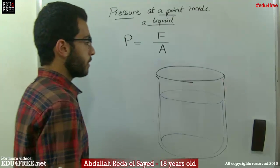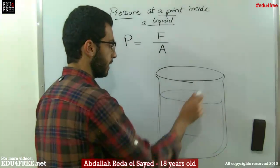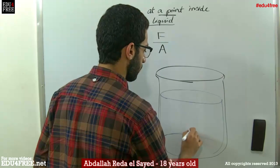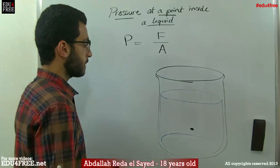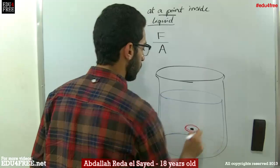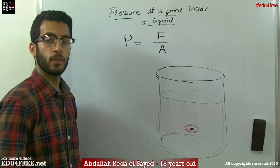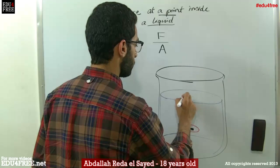We are going to calculate the pressure exerted by the liquid over that point, for example. We are going to imagine that there is a column of water or a cylinder of water inside the liquid that has this shape.